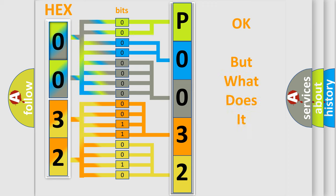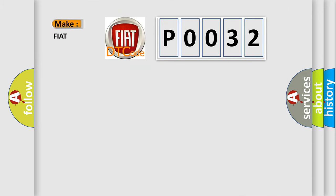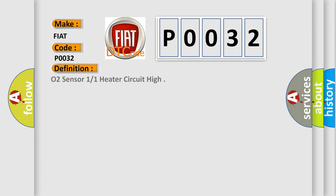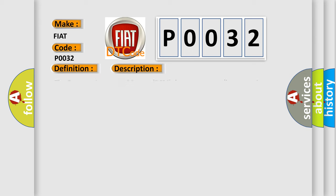We now know in what way the diagnostic tool translates the received information into a more comprehensible format. The number itself does not make sense to us if we cannot assign information about what it actually expresses. So, what does the diagnostic trouble code P0032 interpret specifically for Fiat car manufacturers? The basic definition is: O2 sensor bank 1 sensor 1 heater circuit high. The powertrain control module (PCM) detects an open heater resistance of 400 ohms or more in the oxygen sensor 1/1 heater control circuit for at least 216 seconds.